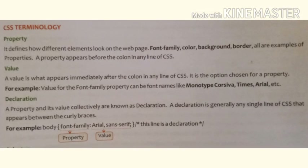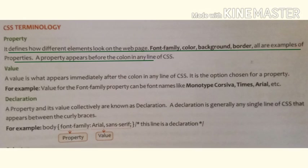Now let's understand the CSS terminology. The first term is property. It defines how different elements look on the webpage. Font, family, color, background, and border are all examples of properties.